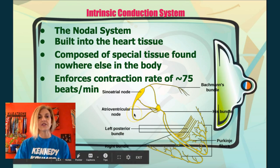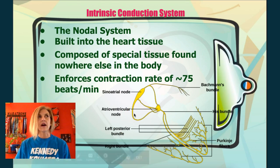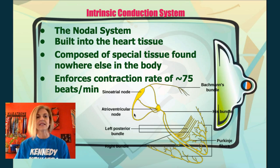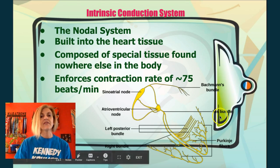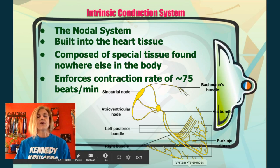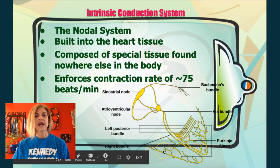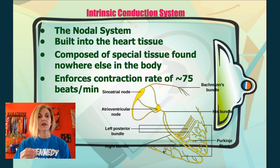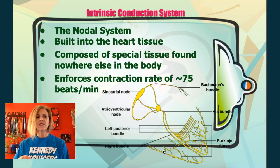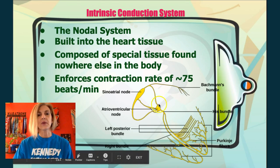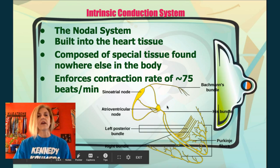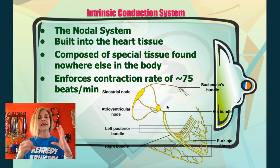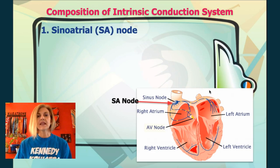The tissues up in the atrial region contract about every 0.8 seconds, which is faster than the ventricles down here — ventricular tissue has a slower reactivity. So you really need a system that connects the two together, and that's where we have the atrioventricular node, which will keep the two beating in sync.